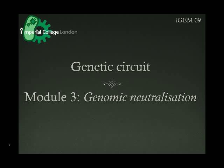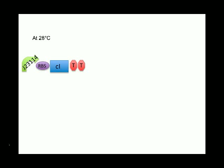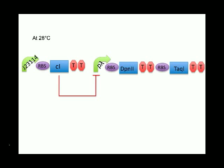This is Module 3. It performs the removal of genetic material. At 28 degrees Celsius, the CI protein is constitutively produced. This represses the Lambda CI promoter, hence inhibiting the production of the downstream restriction enzymes DPN2 and TAC1.